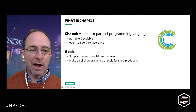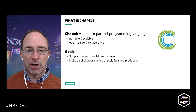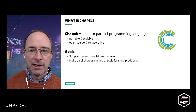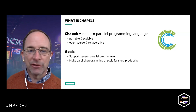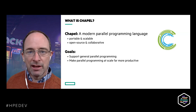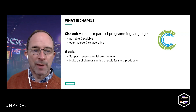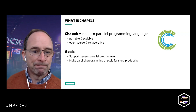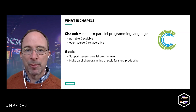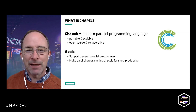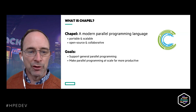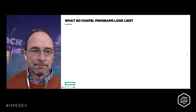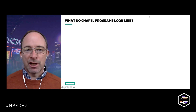The two main goals of Chapel at the highest level: first, to support general parallel programming — any parallel algorithm on any parallel hardware. If you can't do something in Chapel, Chapel has failed at this goal. Second, to make parallel programming at scale far more productive than it is today — being fast, clean, scalable, and portable, all in one language.